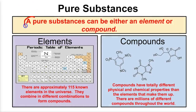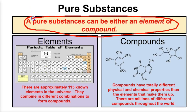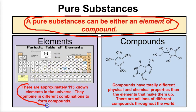Let's take a closer look at pure substances. A pure substance can either be an element or a compound. If you're one of the 115 or so elements from the periodic table, you're going to be a pure substance. For example, hydrogen, helium, boron, carbon, nitrogen, oxygen, fluorine, and neon are all pure substances.